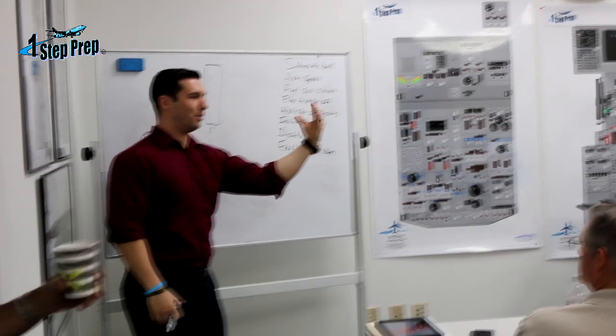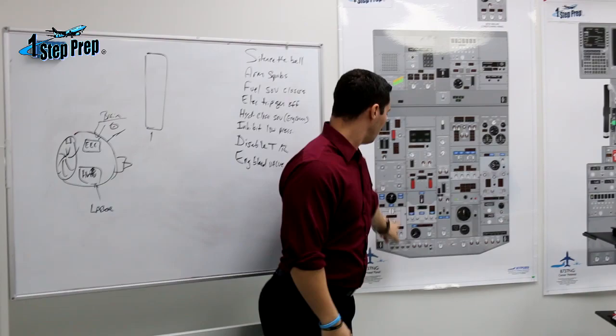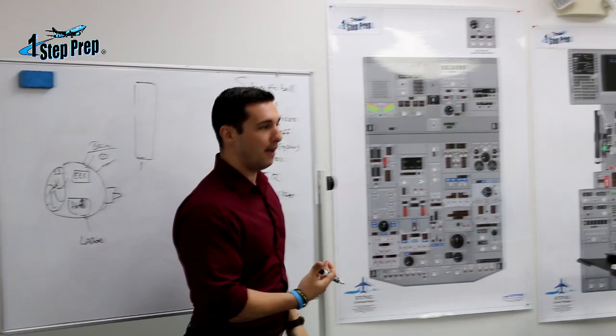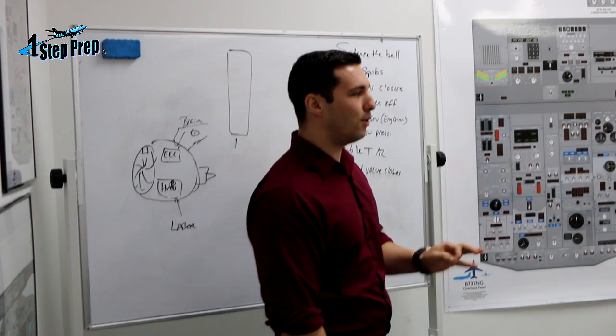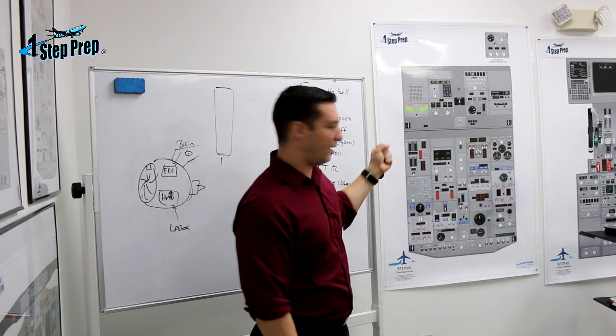The easiest way, honestly, is to just go across the panel and look for the areas that are light in color. You'll notice there's a dark gray and a light gray — not because they ran out of paint. It's because these are the areas affected by the pulling of a fire switch. They cannot do the oral without this panel in front of you, because the questions are going to be pulled straight out of here. So just remember: close the fuel shutoff valve.